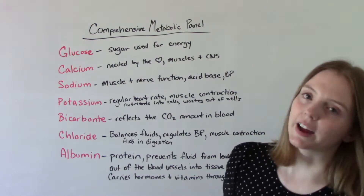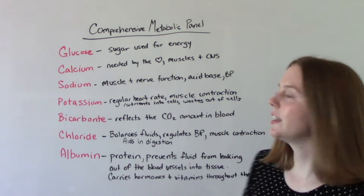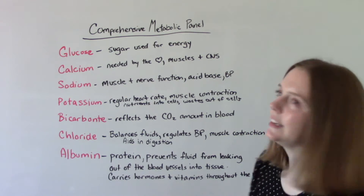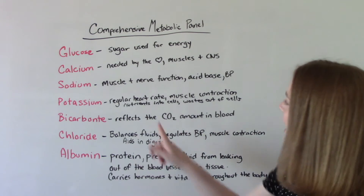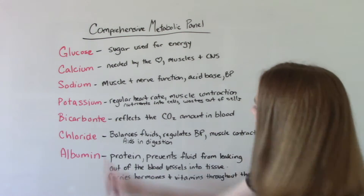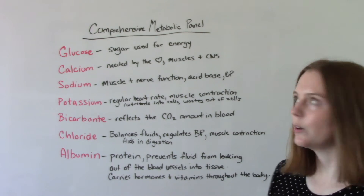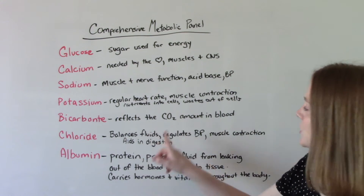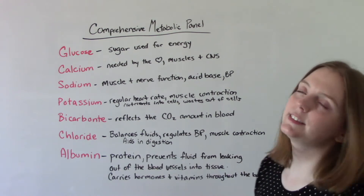Sodium also affects muscle and nerve function; it can affect our acid-base balance and helps regulate our blood pressure. Potassium is needed for a regular heart rate, muscle contraction, and helps nutrients go into cells and waste go out of cells. Bicarbonate reflects the amount of CO2 in our blood, so again it relates to acid-base balance. Chloride balances fluids, regulates our blood pressure, aids in muscle contraction, and aids in digestion.